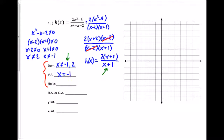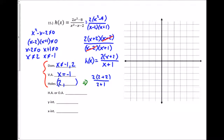The restriction x=2 got cancelled, so that's a hole in the graph at x=2. To find the y-value of the hole I plug x=2 into the simplified function: 2(2+2)/(2+1) = 2(4)/3 = 8/3, which is about 2 and 2/3. So the hole is at (2, 8/3).